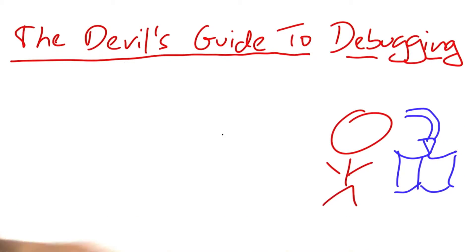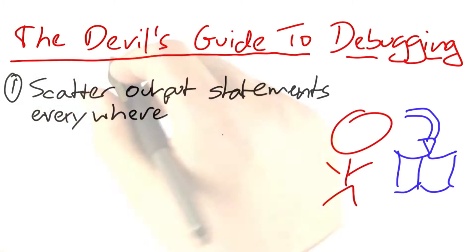What we've seen so far is just three of these rules. The first one is to scatter output statements everywhere in the code. Output whatever you want, where you want it, just put it in there such that you will always be able to figure out what was going on or not.